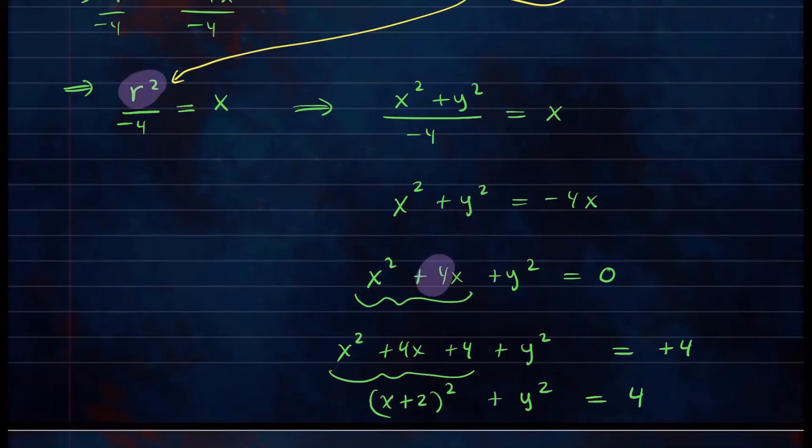Now this will factor into x plus 2 squared, and then we still have y squared is equal to 4. Well, now we can identify what kind of shape this is. This is a circle centered at negative 2, comma 0, and radius 2. So that's the shape of this equation.